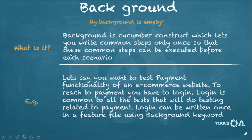To summarize: background is a Cucumber construct which lets you write common steps only once so that they can be executed before each scenario. A real-time example is testing the payment functionality on your e-commerce website — to reach the payment functionality you have to go through login. The login part is common across all payment tests, so why would you want to write the login steps again and again in each scenario? You would rather put it in one place — the background.